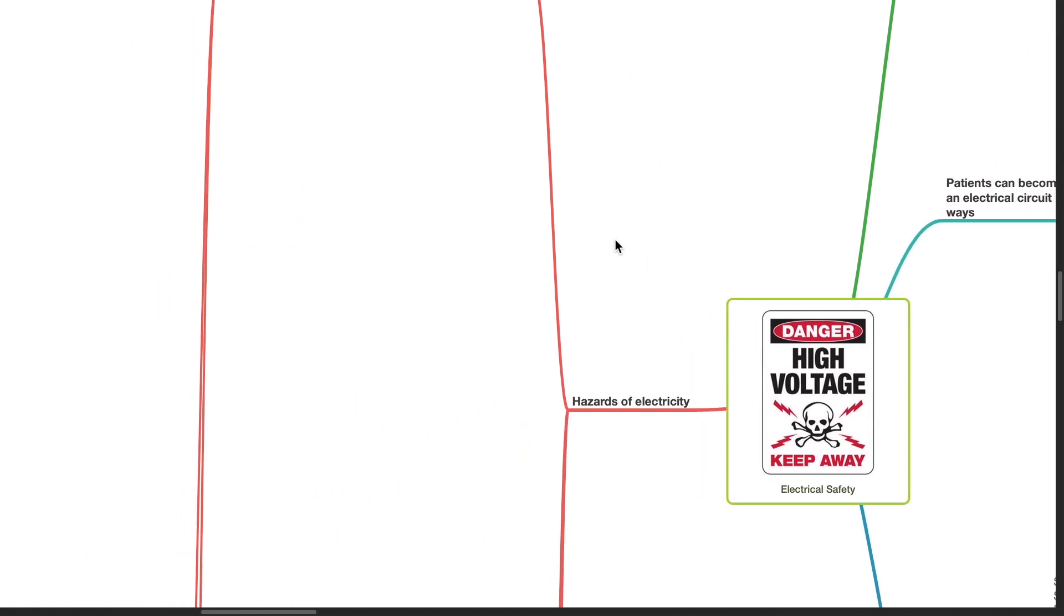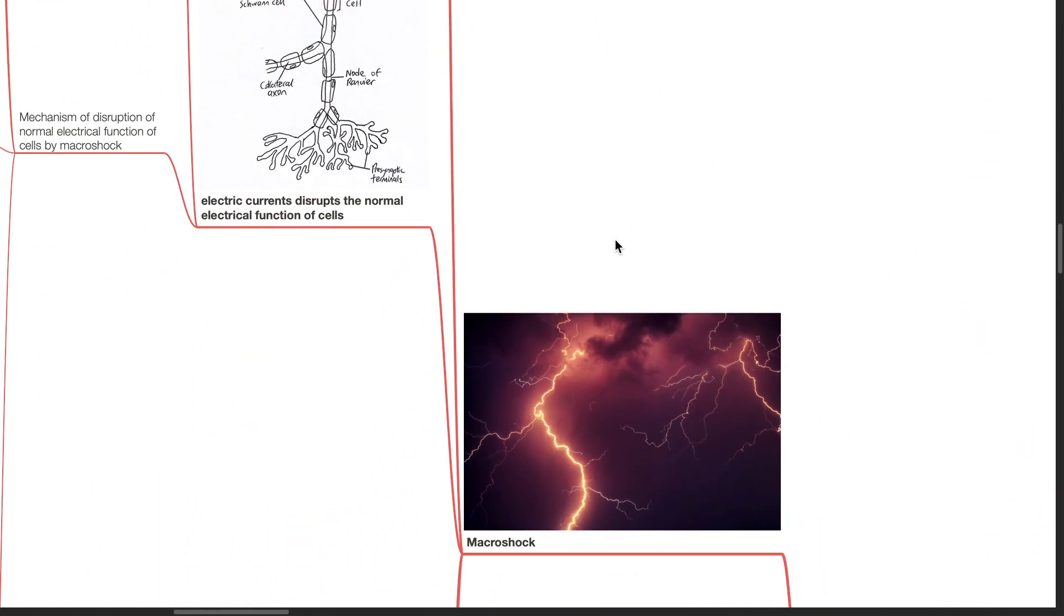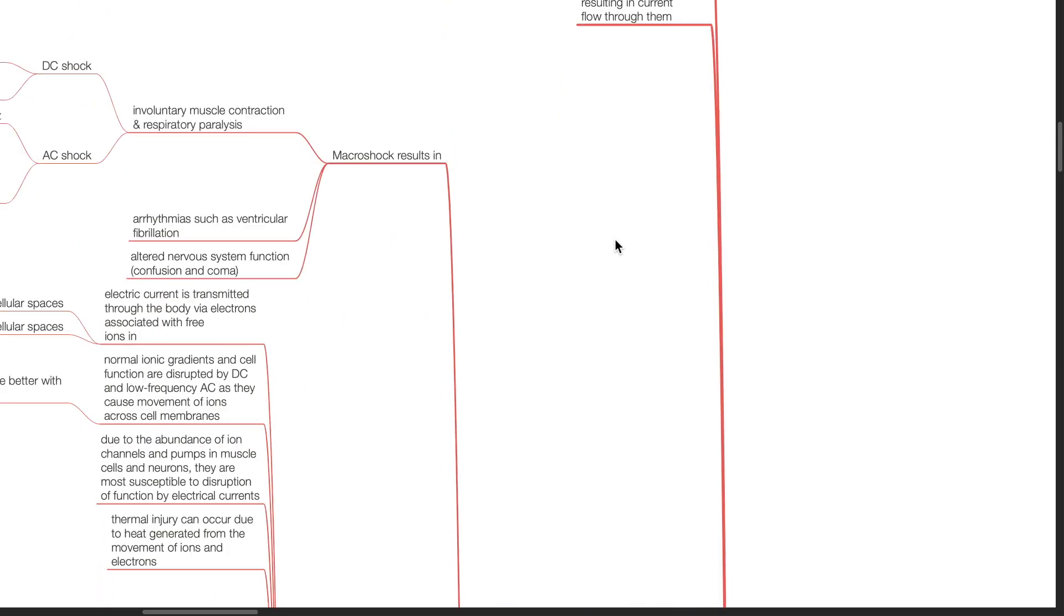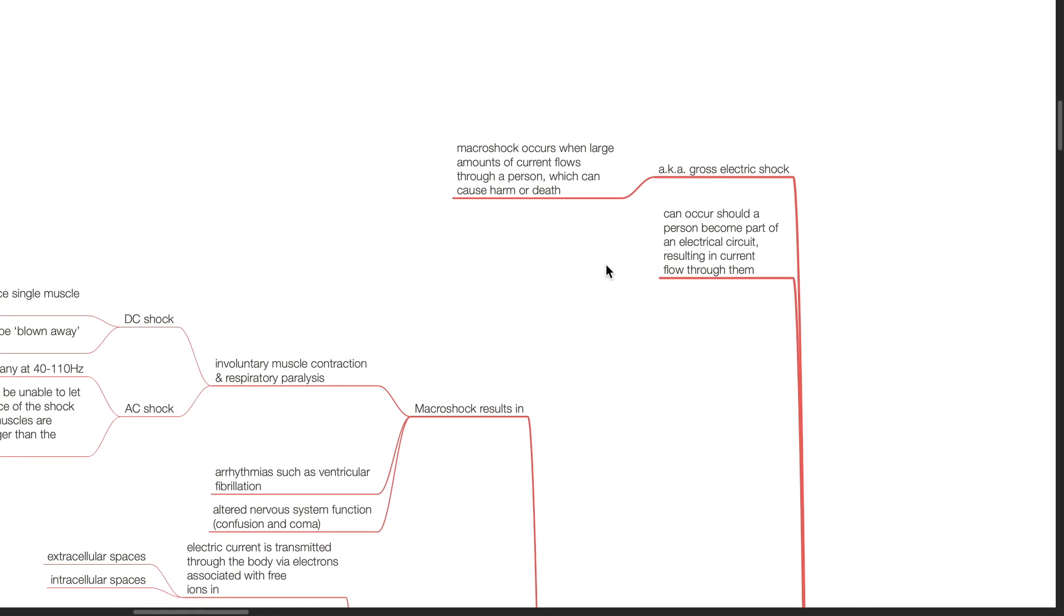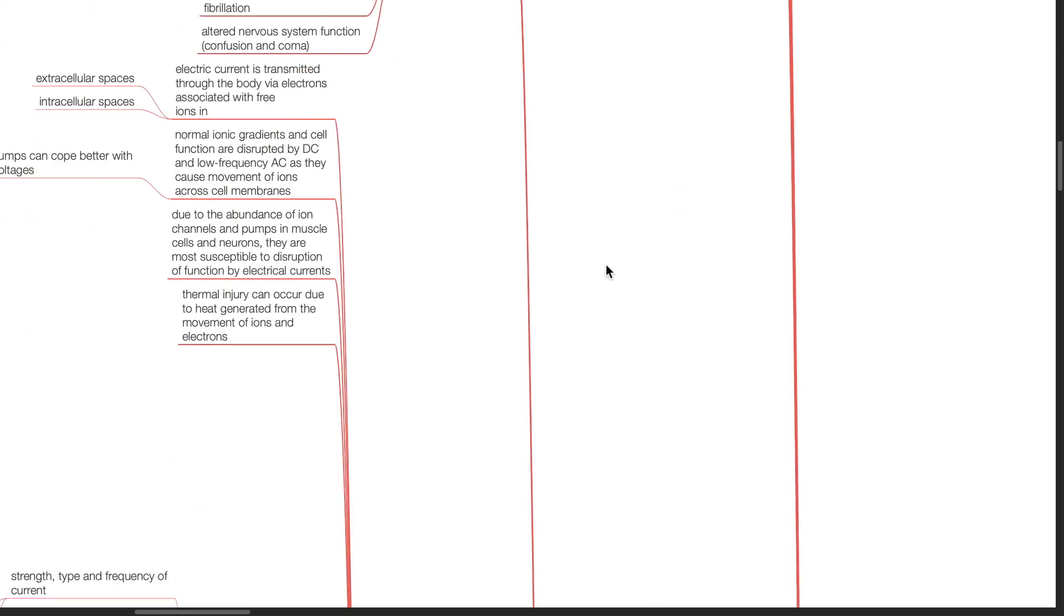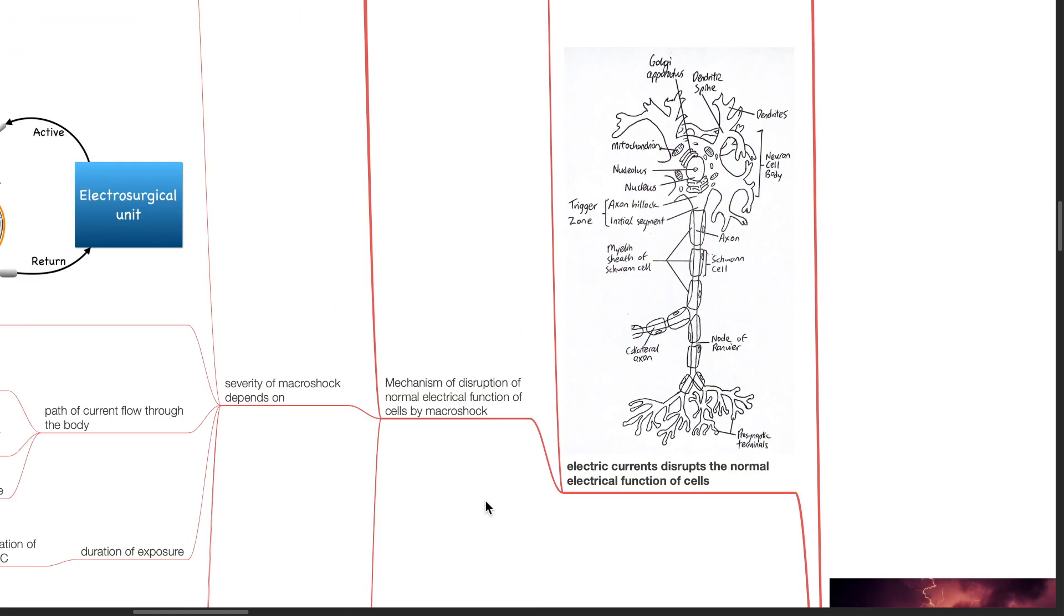Hazards of electricity. Macroshock, also known as gross electric shock, occurs when large amounts of current flow through a person which can cause harm or death. It can occur should a patient become part of an electrical circuit, resulting in current flow through them. Electric currents disrupt the normal electrical function of cells.